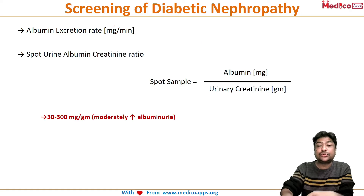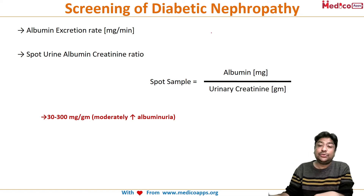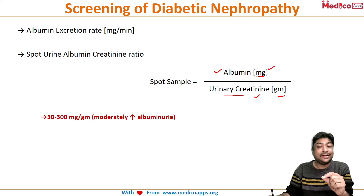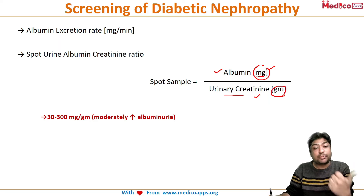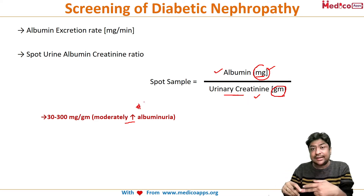Because the albumin excretion ratio requires 24 hours of urine collection, another important test is the spot urine albumin-to-creatinine ratio. In a single spot sample, you measure albumin in milligrams and creatinine in grams. A ratio of 30 to 300 is diagnostic of moderately increased albuminuria. This is the second screening test for diabetic nephropathy.